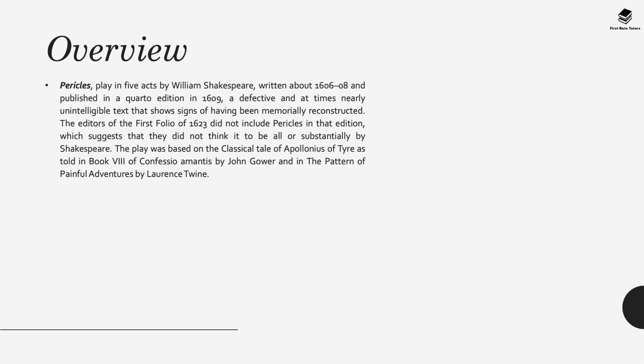Pericles is a play in five acts by William Shakespeare, written around 1606 to 1608 and published in a quarto edition in 1609 — a defective and at times nearly unintelligible text that shows signs of having been memorially reconstructed. The play was based on the classical tale of Apollonius of Tyre as told in book 8 of Confessio Amantis by John Gower and in The Pattern of Painful Adventures by Lawrence Twine.